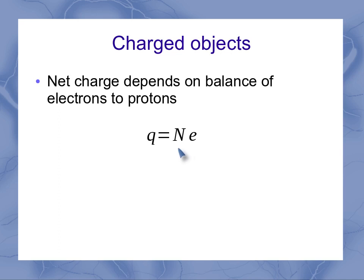So for example, if I have an object that's got the exact same amount of electrons and protons, then nothing is imbalanced. Our N is 0, and it has no net charge.